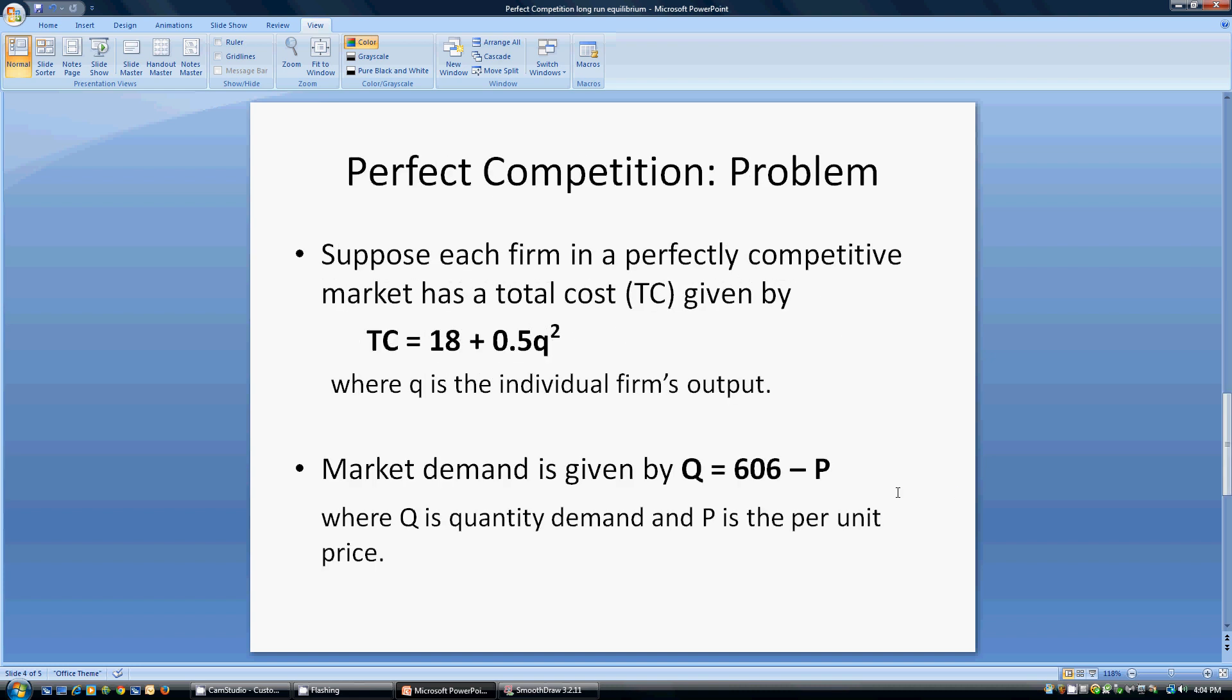Here's the setup for our problem. Suppose there are numerous firms in a perfectly competitive market, each with a total cost given by TC = 18 + 0.5q², where 18 represents fixed cost and q is the individual firm's output. This market has a demand curve given by Q = 606 - P, where Q is the quantity demanded in the market by all consumers and P is the price per unit.